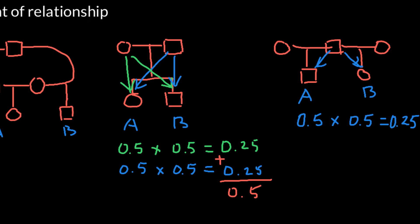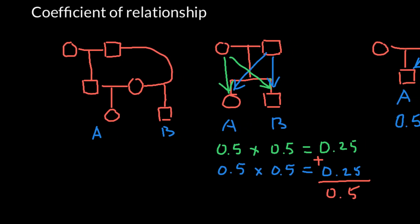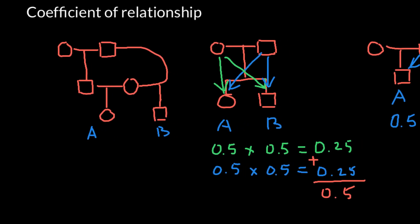In the example of the family with two children sharing both parents, the coefficient of relationship between individual A and B would be 0.5, or 50%. Now let's take a look at our first example.